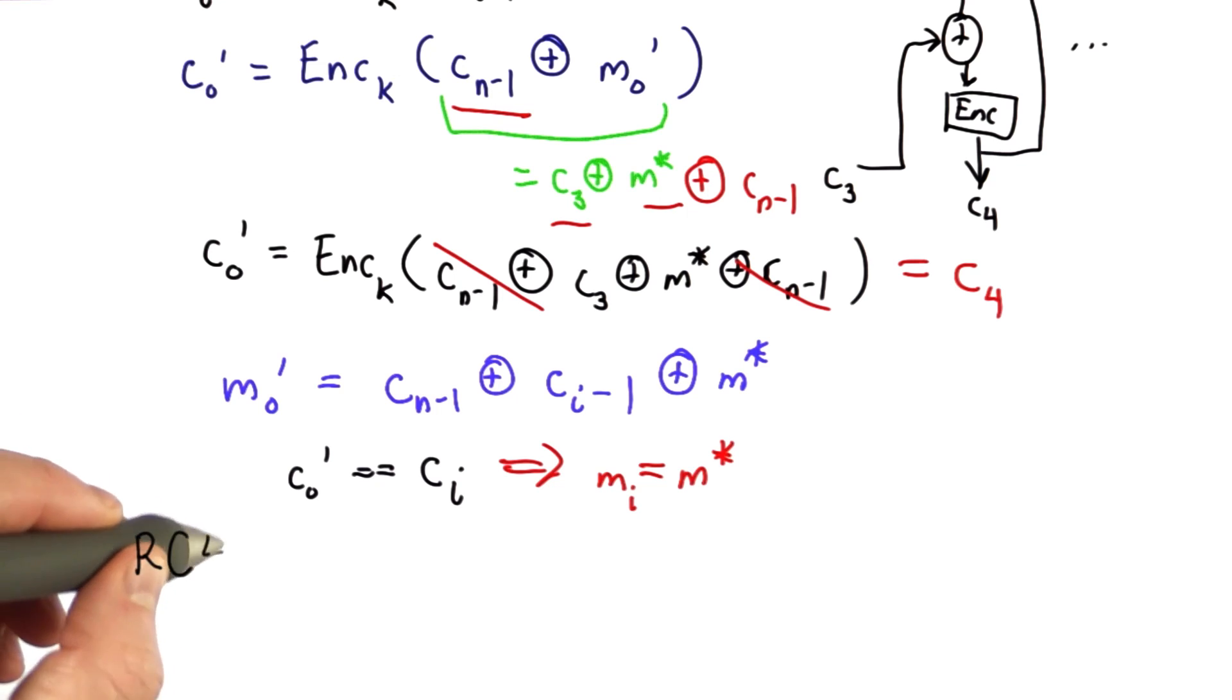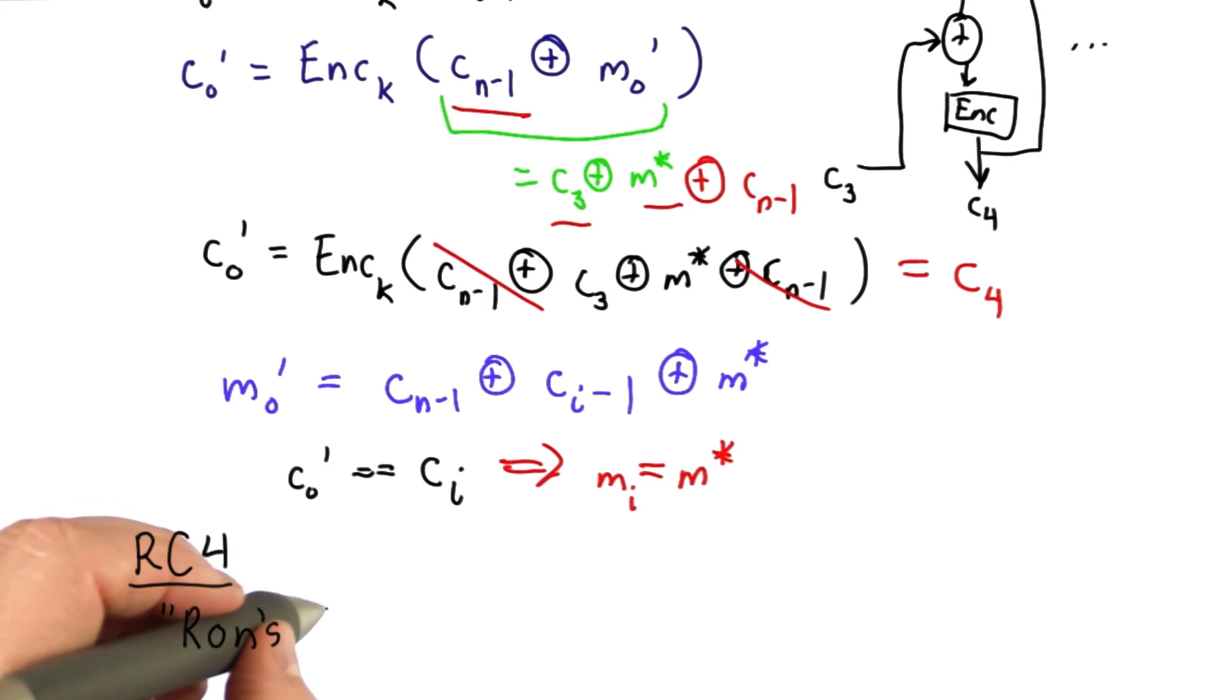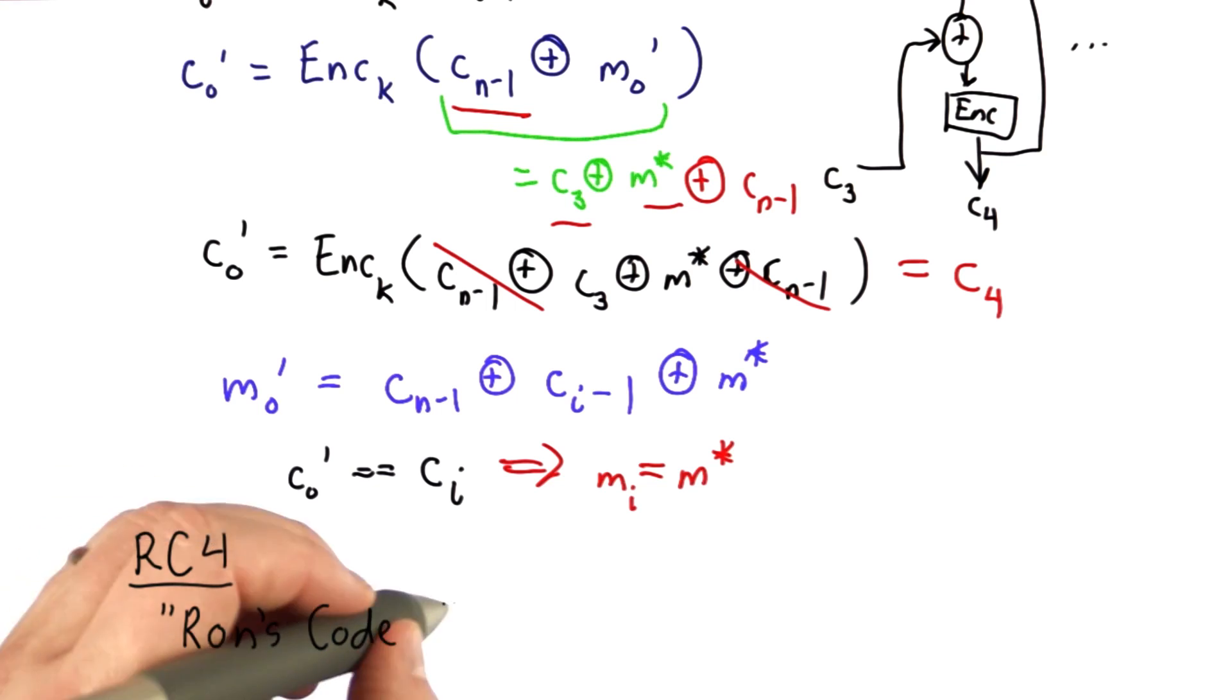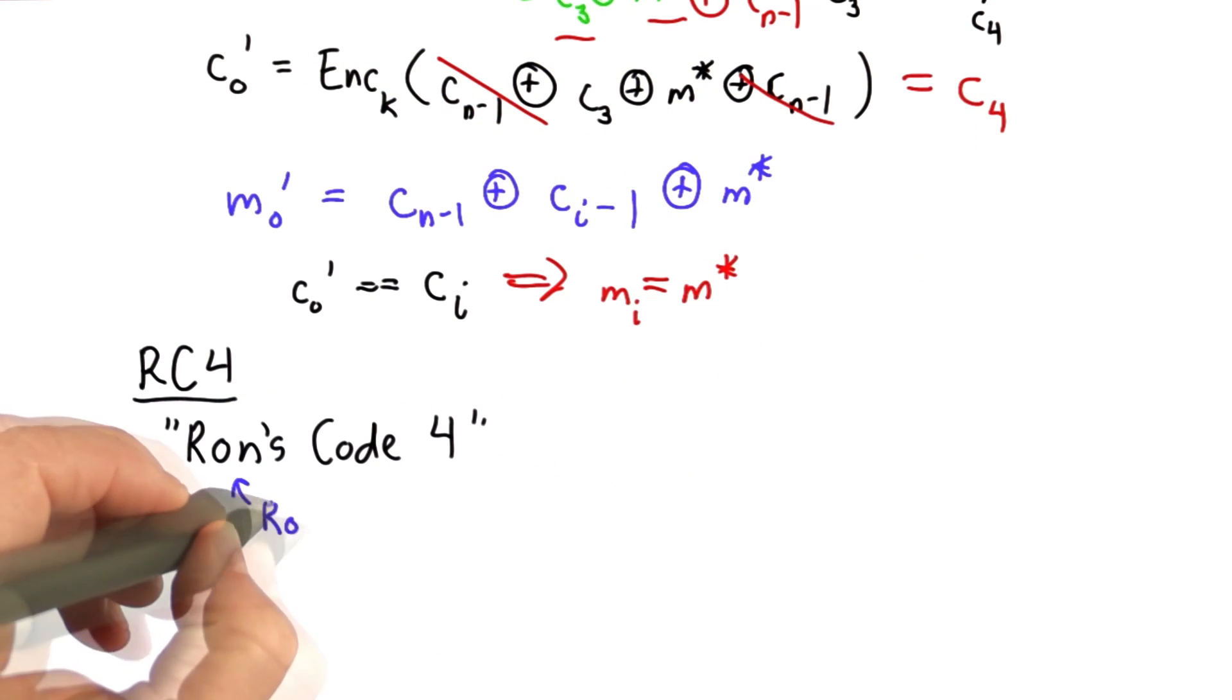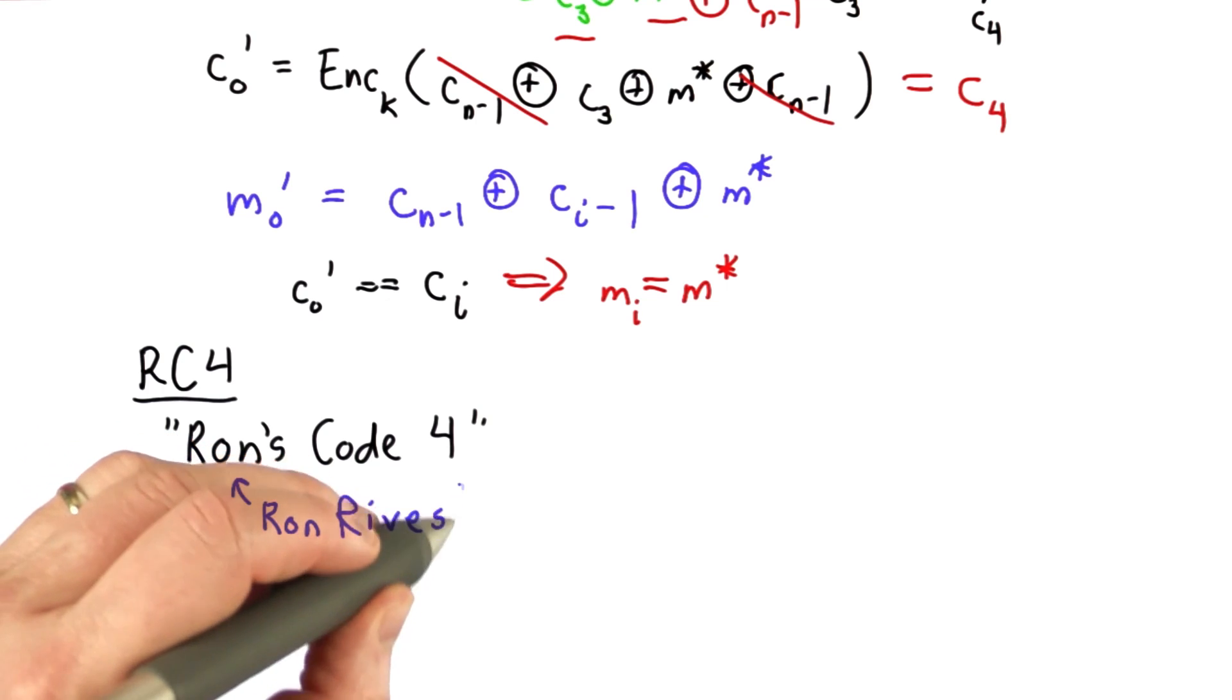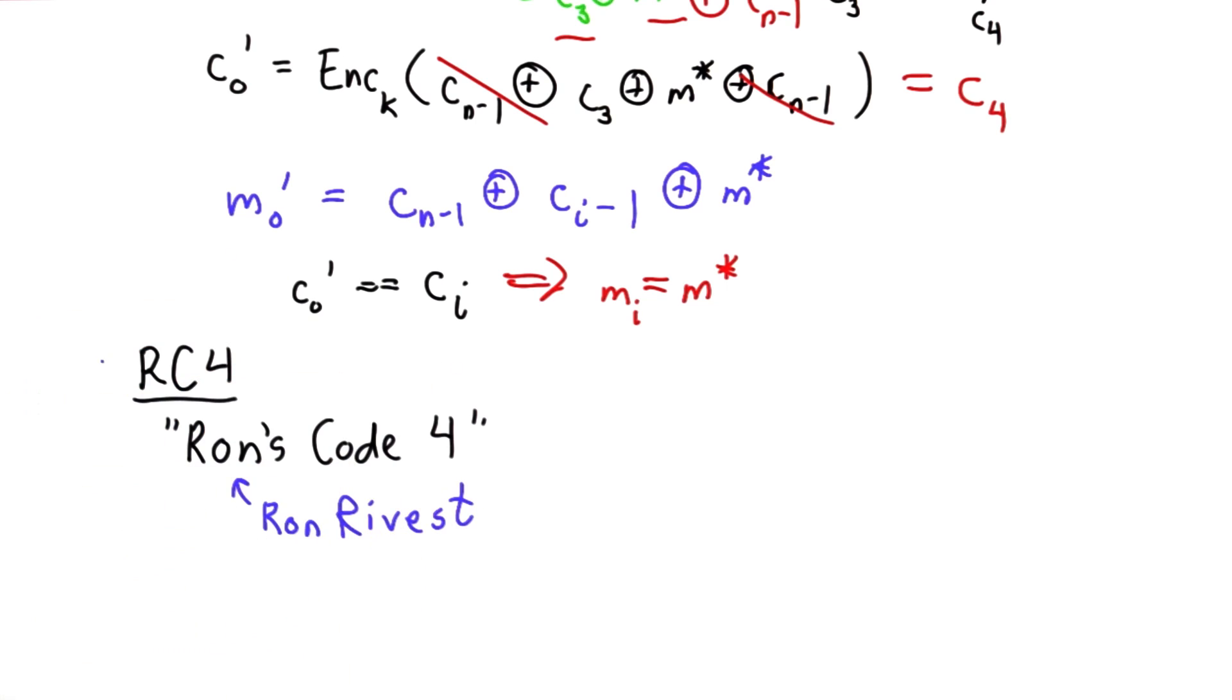The parameters we saw were using RC4. RC4 is a symmetric encryption algorithm. It at least loosely stands for Ron's Code 4. That's not what it officially stands for, but that's what most people think of it as. This is Ron Rivest, the R in RSA, who invented this symmetric encryption algorithm known as RC4.